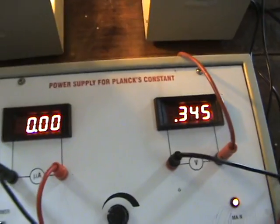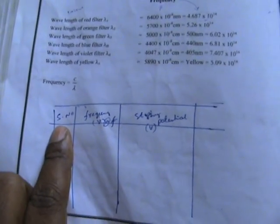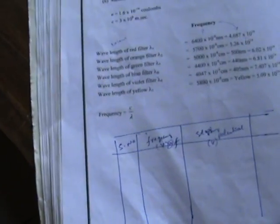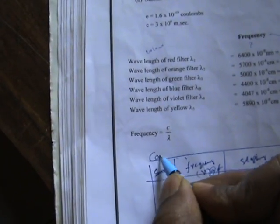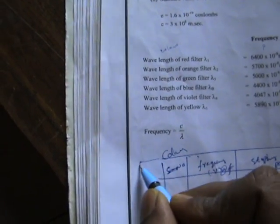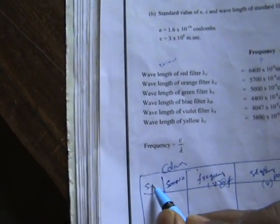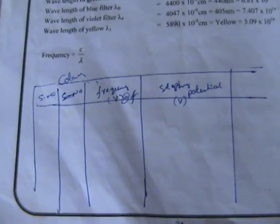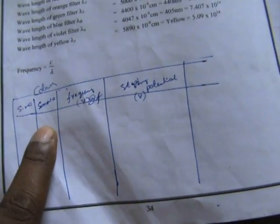0.338 is your stopping potential for red color. Now you have to note the frequency. In place of serial number, you write the color — color is red. So we have one column for serial number and one column for color.